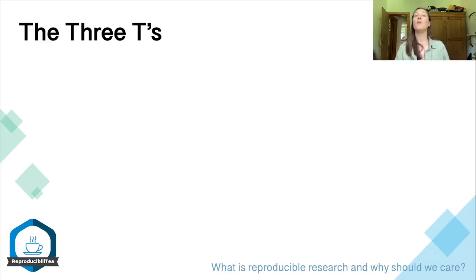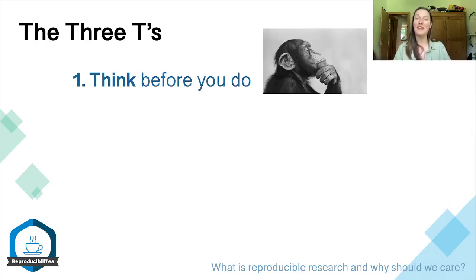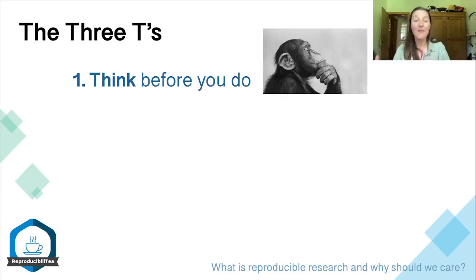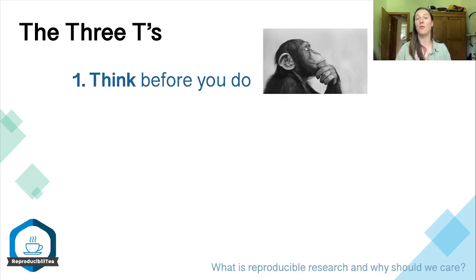To conduct reproducible research, we're going to give you the three T's — or three pillars — of reproducibility to live by. The first is think before you do. This seems obvious, but when it comes to data, what we usually do is collect all our data and then decide how best to analyze it. The appropriate best practice is actually to decide on your analysis methods before you've collected your data, which is challenging but an important way to train yourself to think before you do.